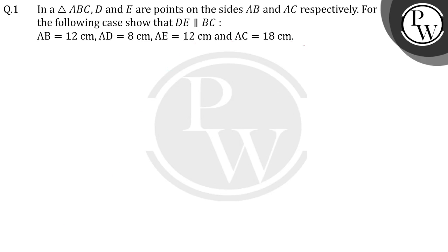Hello students, let's see this question. Here we have triangle ABC. D and E are the points on sides AB and AC respectively. We have to show that DE is parallel to BC.